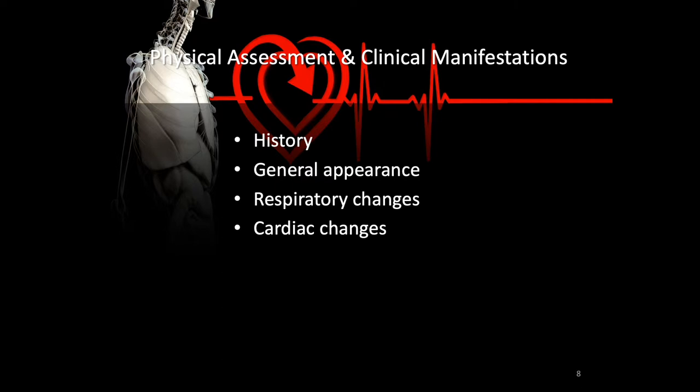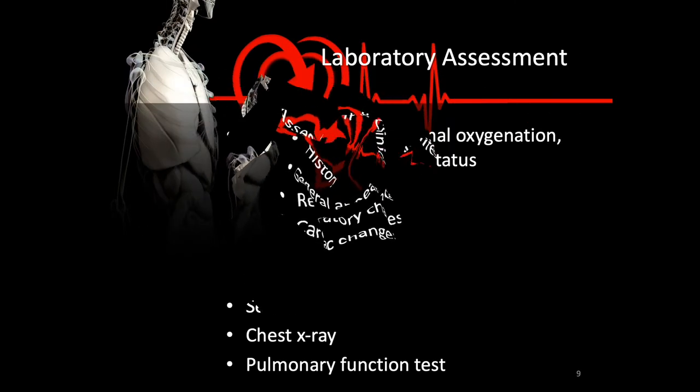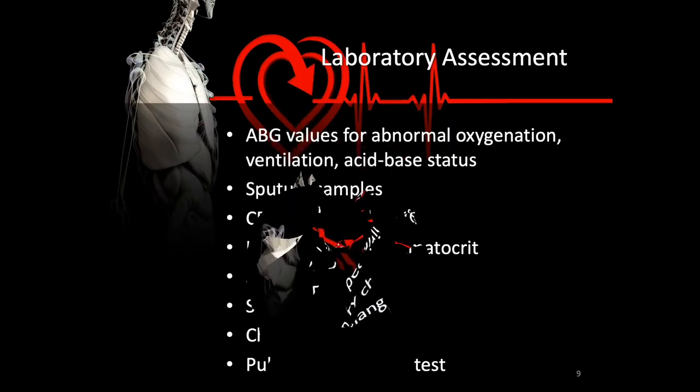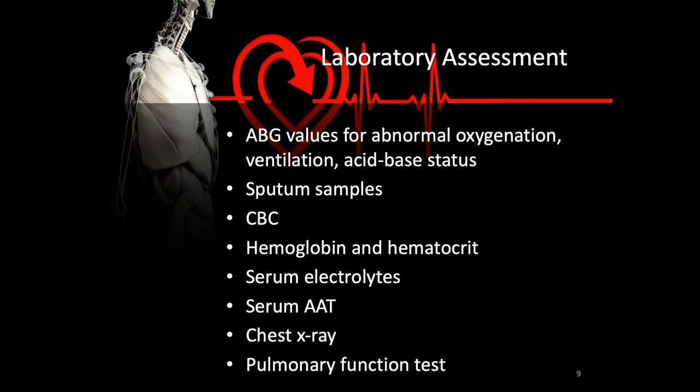Remember that the increased work of breathing causes an increased caloric demand, and because the patient is short of breath, they may not be able to intake as many calories as needed to keep up with the increased oxygen demand. Laboratory assessments should include arterial blood gas values, looking for abnormal oxygenation, abnormal ventilation, and abnormal acid-base status. Remember, abnormal ventilation refers directly to carbon dioxide levels.